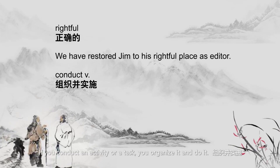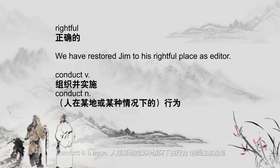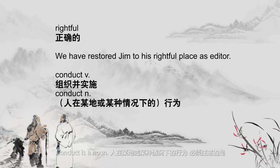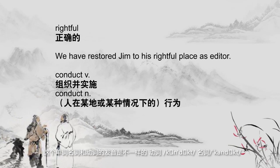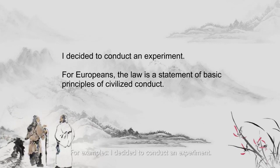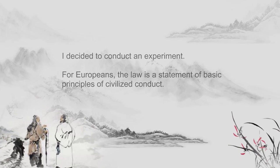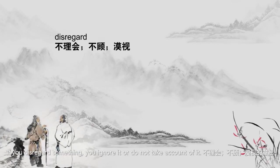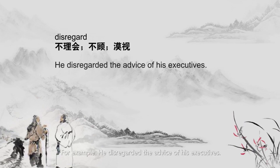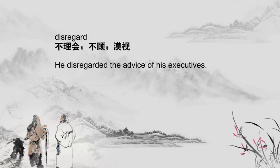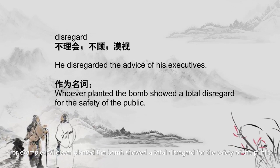'Conduct' — as a verb, if you conduct an activity or task, you organize it and carry it out. As a noun, conduct refers to a person's behavior in a particular place or situation. Note that the noun and verb translations are different. For example: I decided to conduct an experiment. For Europeans, the law is a statement of basic principles of civilized conduct. 'Disregard' — if you disregard something, you ignore it or do not take account of it. For example: the bomb showed a total disregard for the safety of the public.